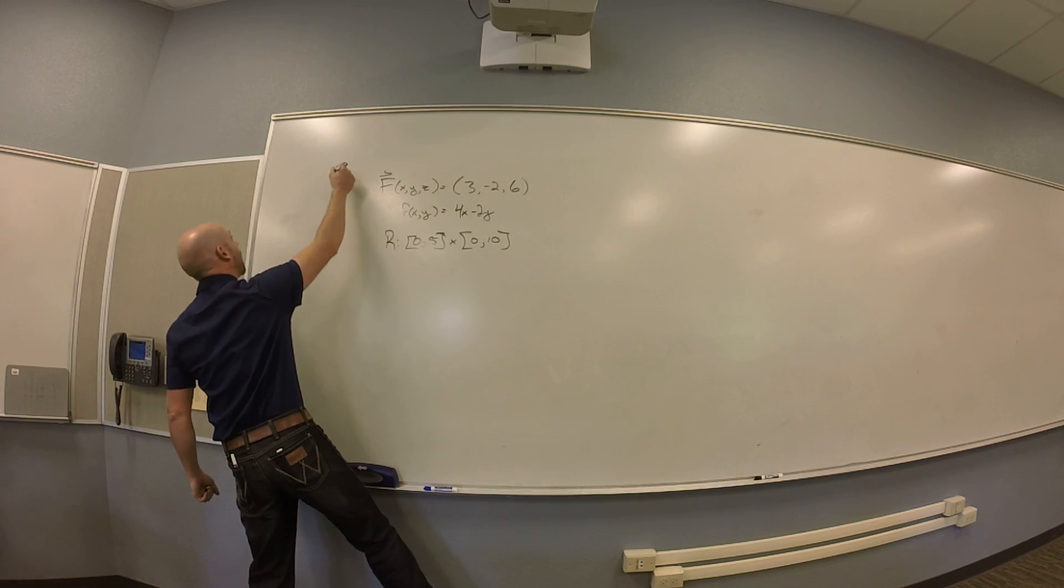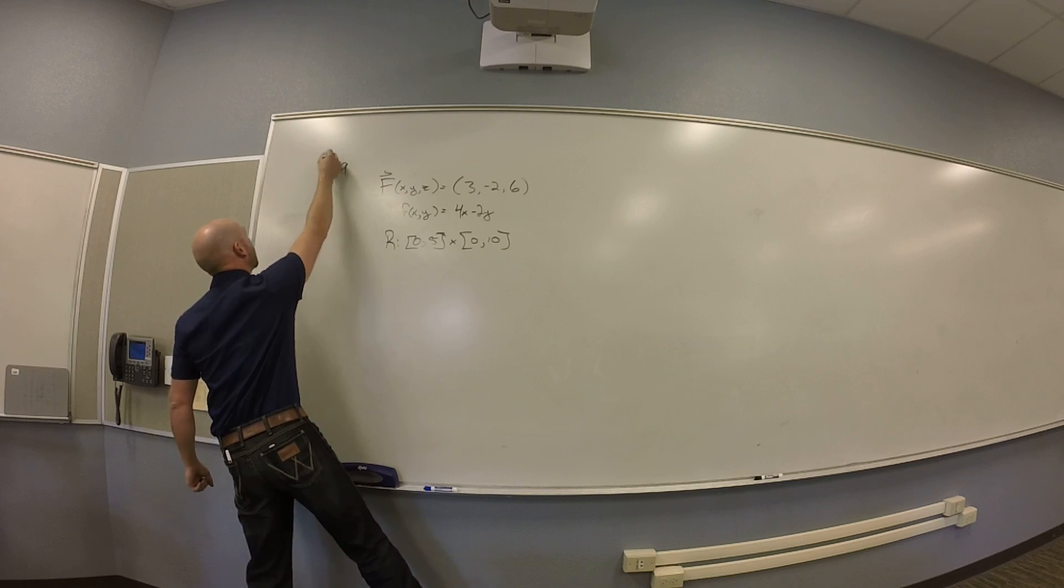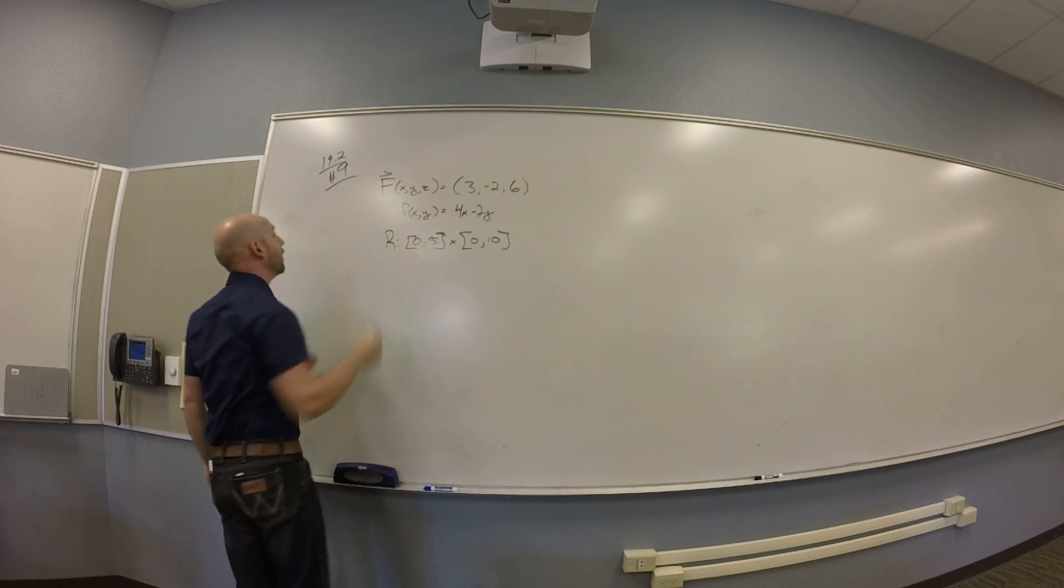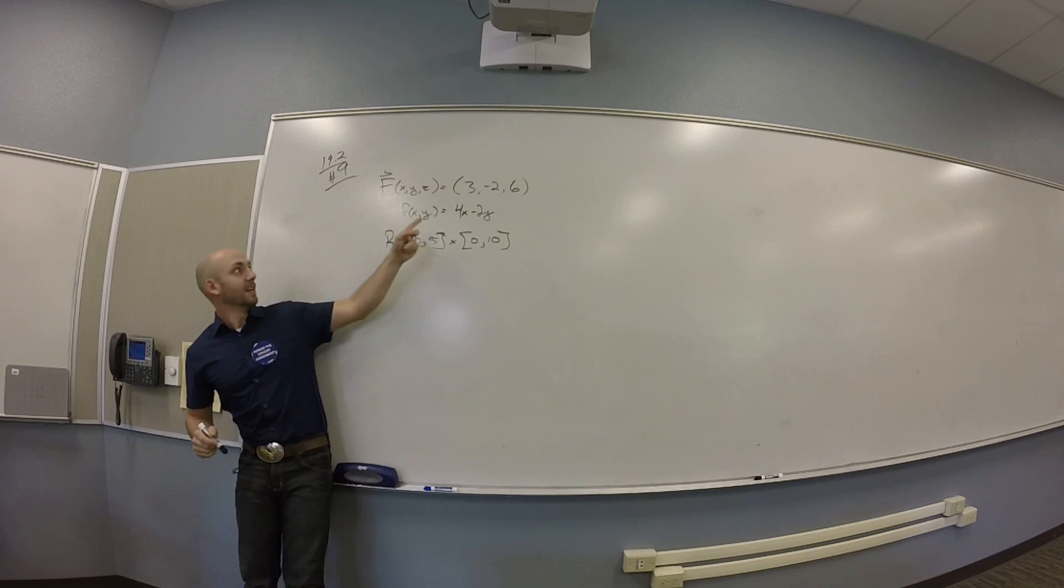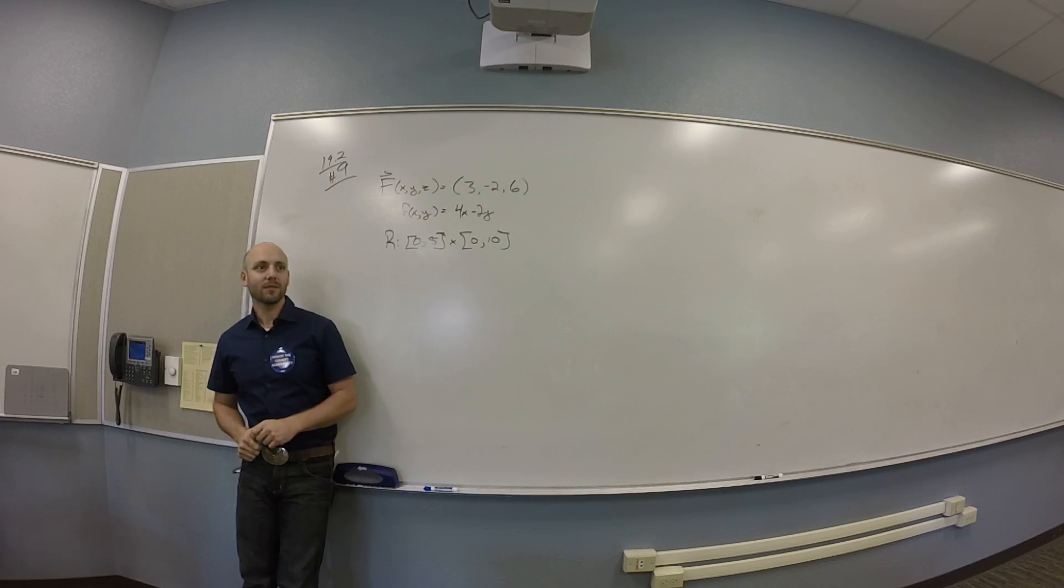So I'm doing number 9 in 19.2 just to warm up. So I've got a vector field. It's 3, negative 2, 6, which is weird, right? So what does this vector field look like?